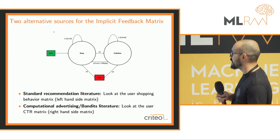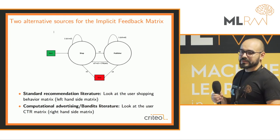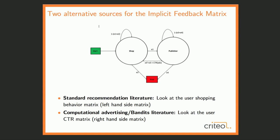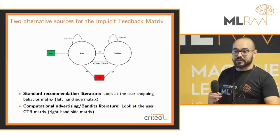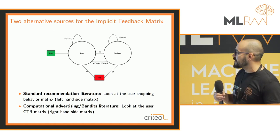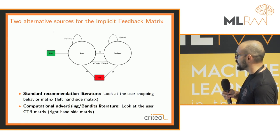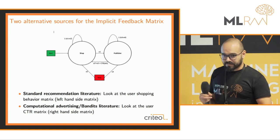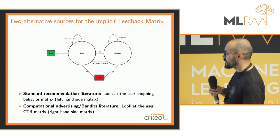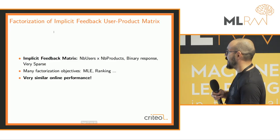Looking at the literature, we have two types. The standard recommendation literature looks at natural user behavior — user-product interaction events like page visits — used for next event prediction or missing link prediction. In the computational advertising and bandits literature, they use the online feedback collected, which is selection-biased by the policy shown. Most methods suffer from problems: the organic approach doesn't optimize the right objective, and the bandit approach has all the selection bias problems.